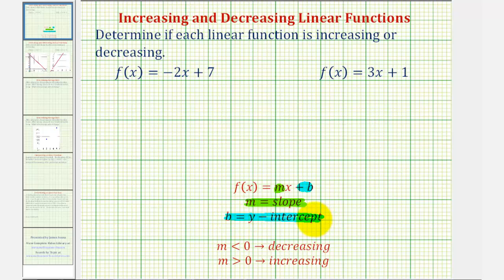We can determine if a linear function is increasing or decreasing by determining the sign of the slope. If the slope is negative, or less than zero, then the function is decreasing. If the slope is positive, or greater than zero, then the function is increasing.